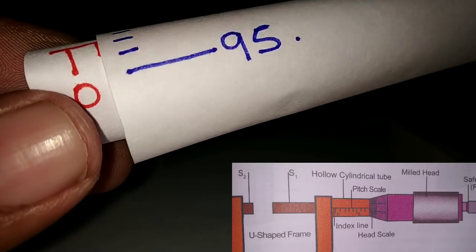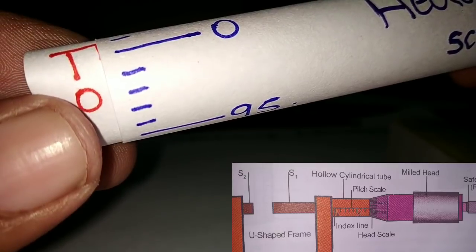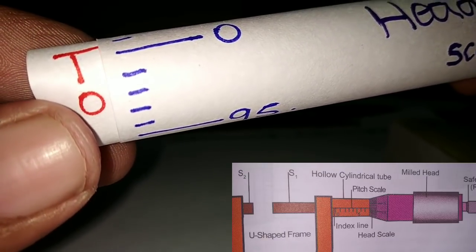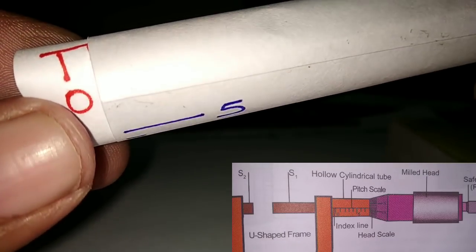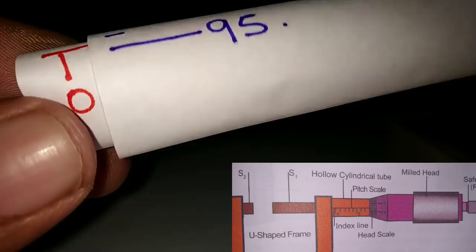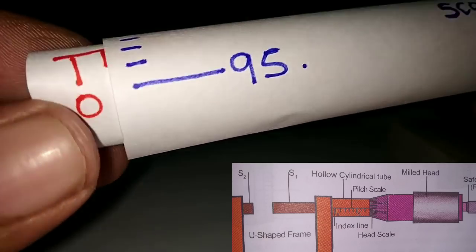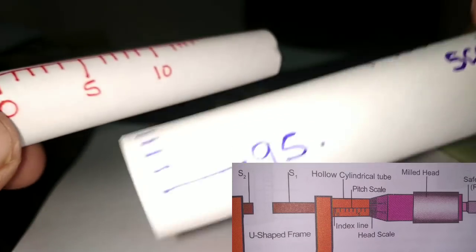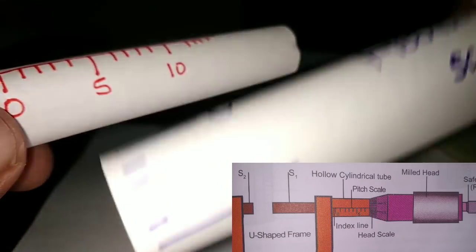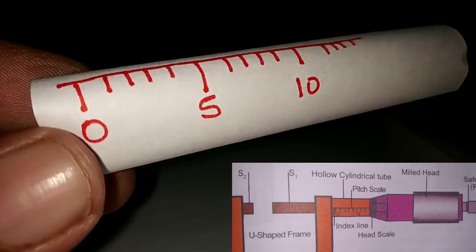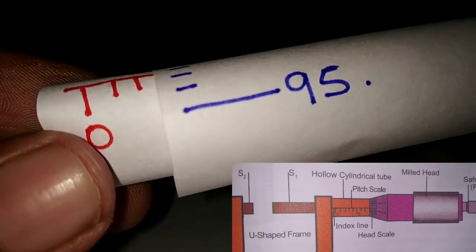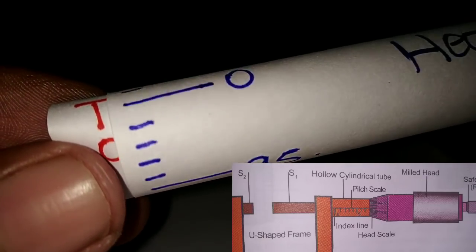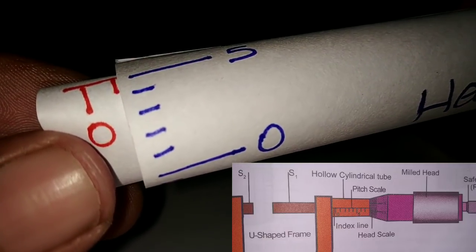If we rotate the whole, it's 0 to 1mm — that is a full rotation. It's like 100 divisions, and that equals 1mm. In the head scale, we have 100 divisions, which equals 1mm. So if we rotate the whole, we can go to the next division.